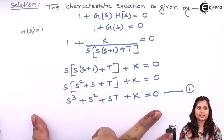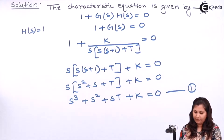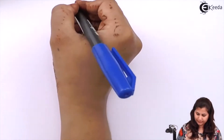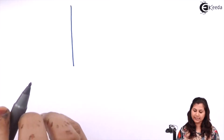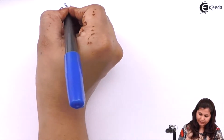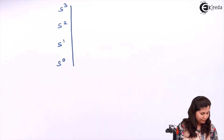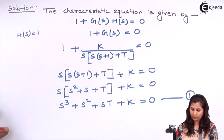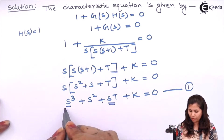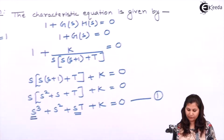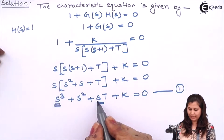Now using this characteristic equation, we obtain the Routh array so that we can determine the stability. The highest power of S in the characteristic equation is S³. So we will start from S³, S², S¹, and S⁰. The coefficient of S³ is 1 and the coefficient of S¹ is T. So for the odd powers of S, we write their coefficients: 1 and T.